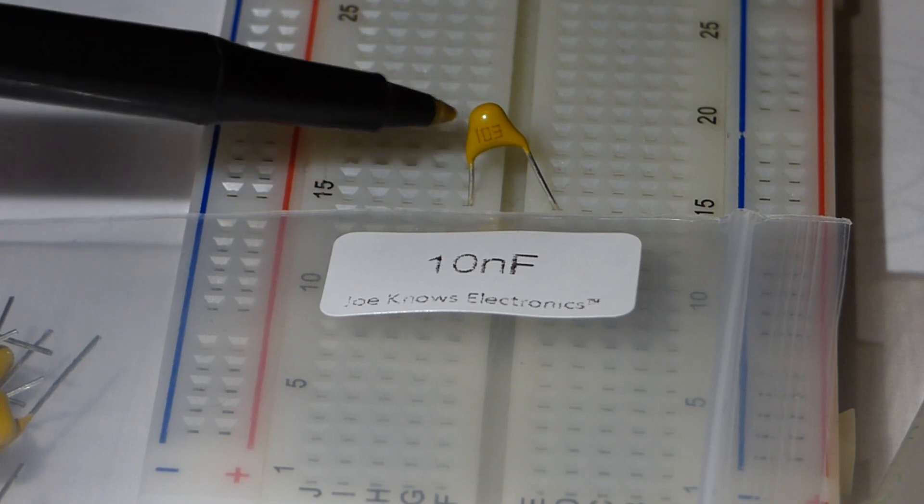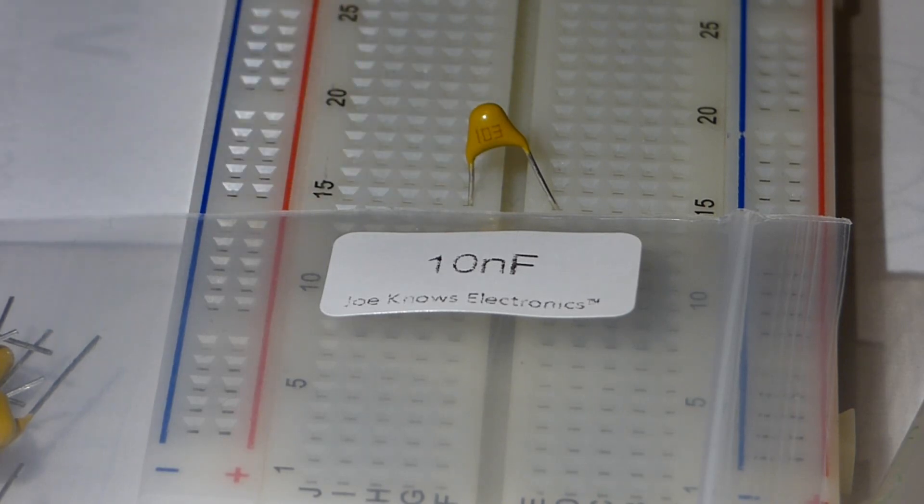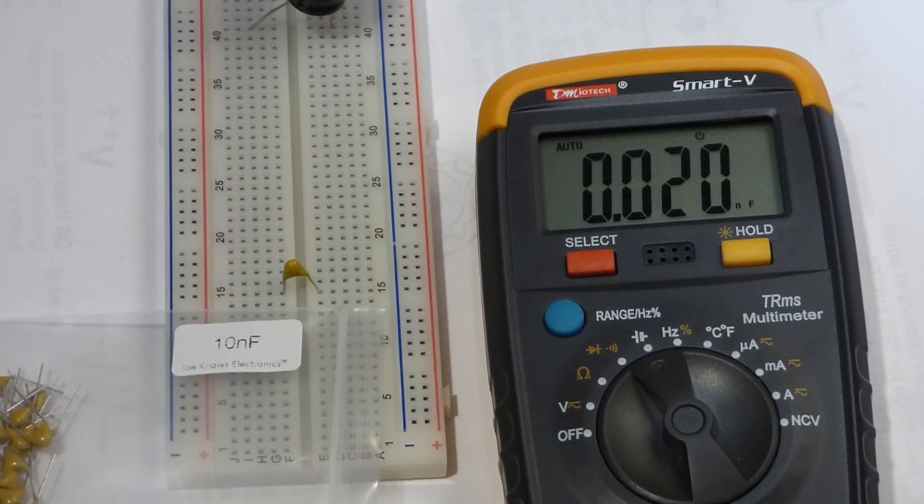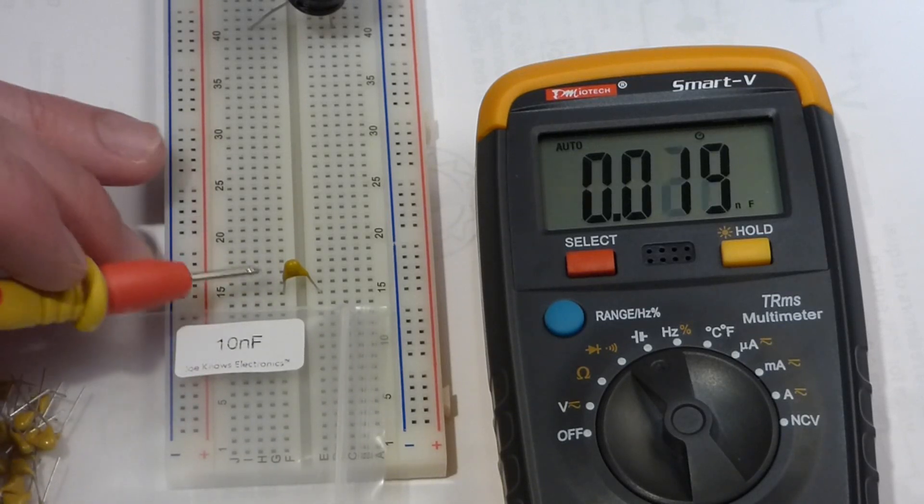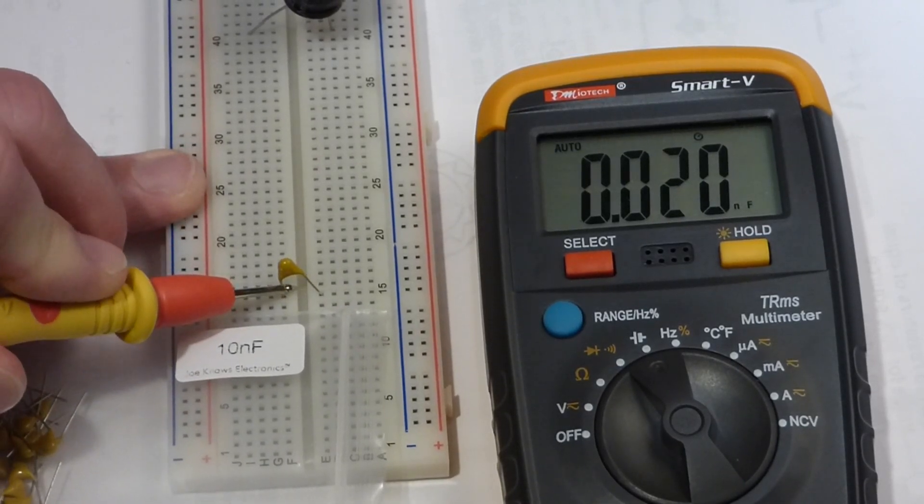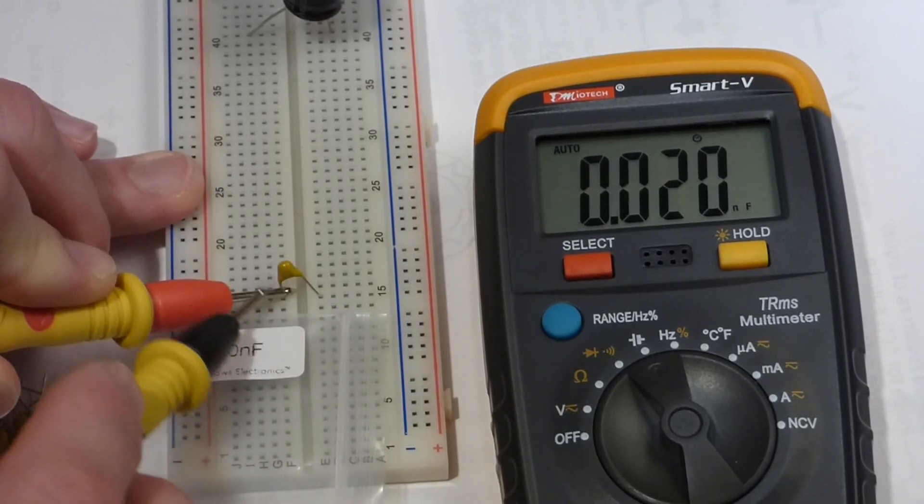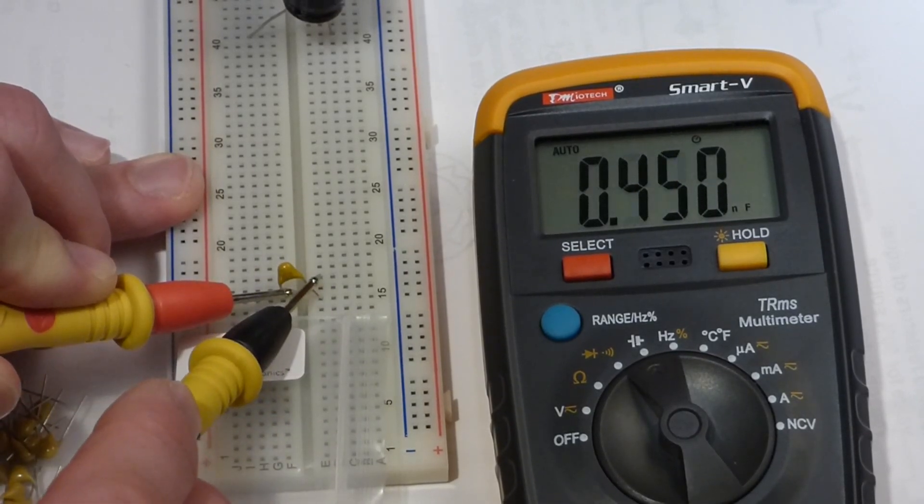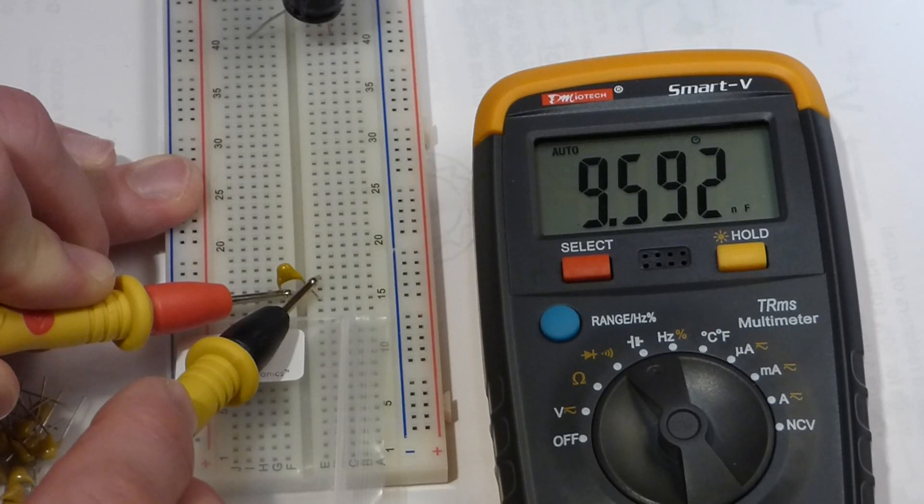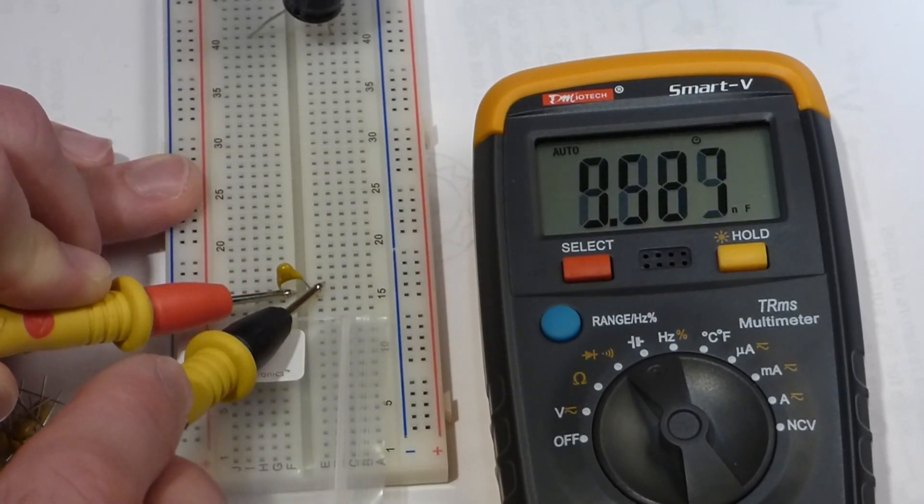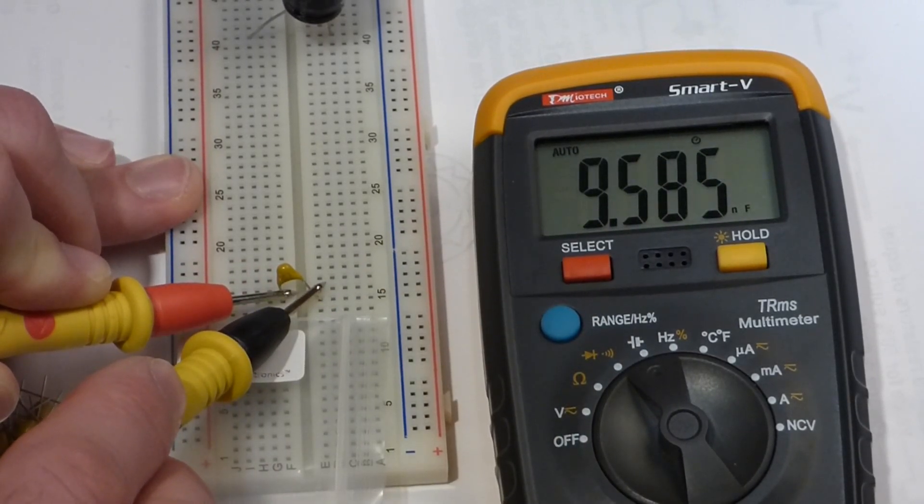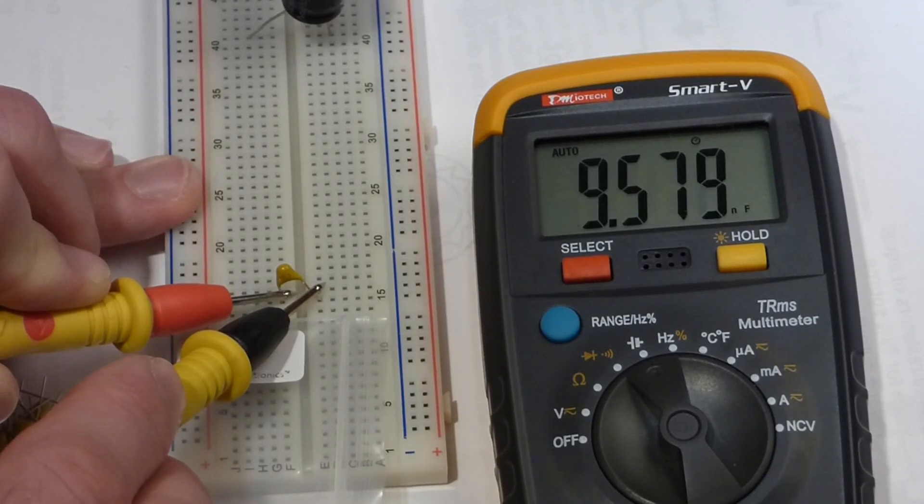We will take our meter, and especially if we didn't have good labeling like this, this will make it a lot easier to find the capacitance of an unknown capacitor. Polarity does not matter with this capacitor—you can put them on either side. Now you see it says nine, basically 9.6, and then in small letters says NF for nanofarad. That is also within five percent of what the rating is.